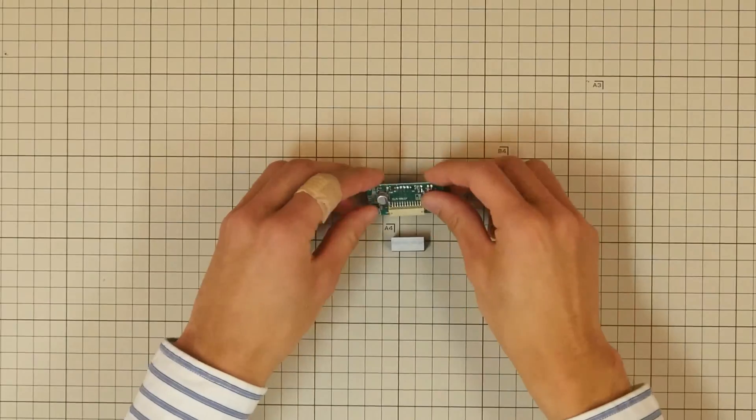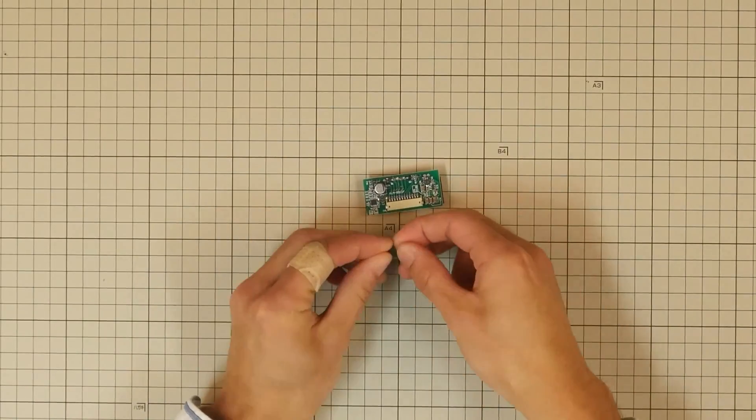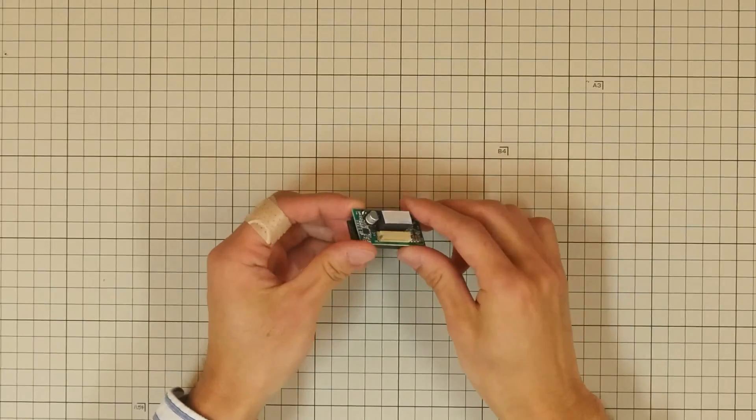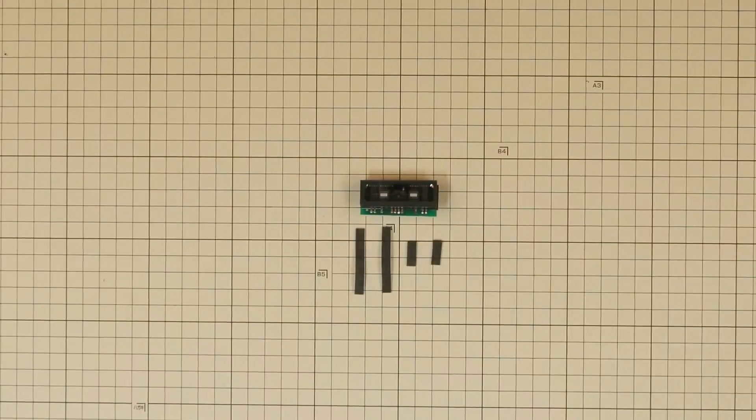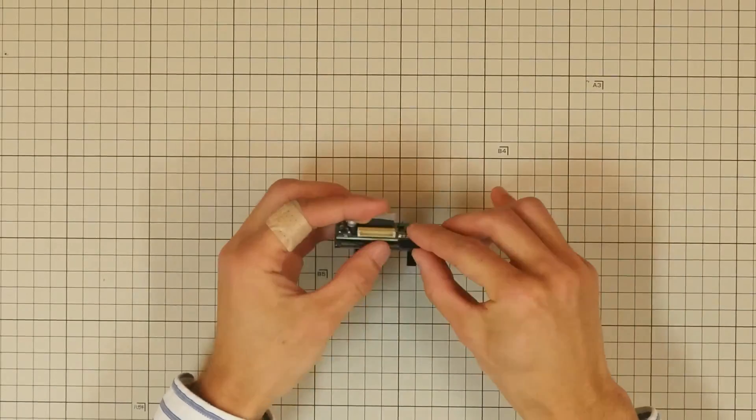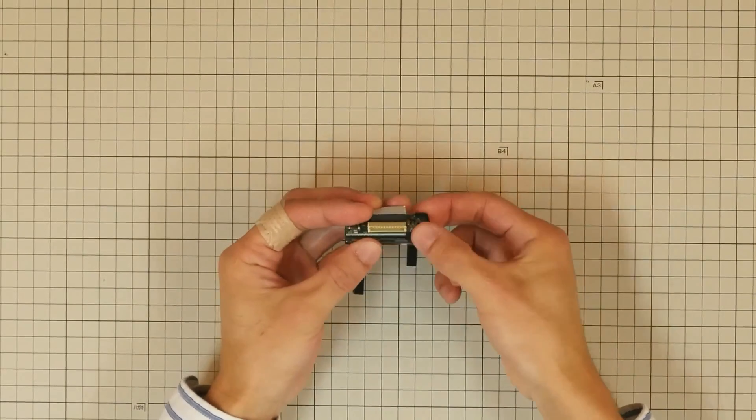First, peel off the release paper from one side of the white cushion and attach it to the back of the NewTube circuit board. Likewise, take the two long black cushions and attach them to the edges of the NewTube circuit board.